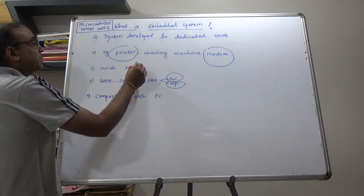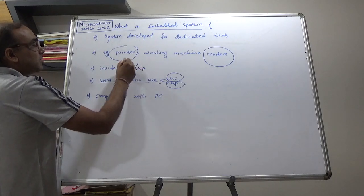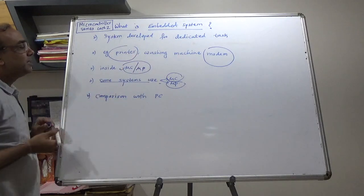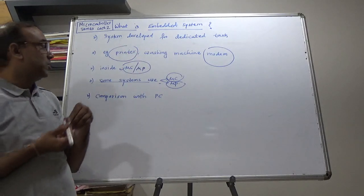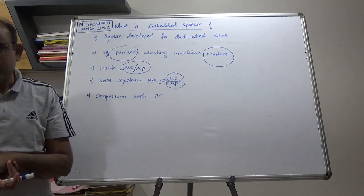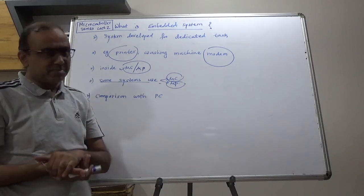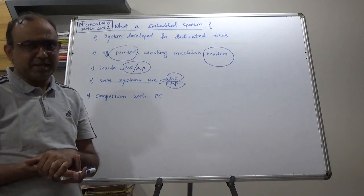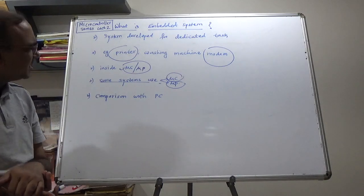So, inside there may be microcontroller or microprocessor. But, majority of embedded systems use microcontrollers because microcontrollers give us a single chip solution. We can have many different things in a single chip. And that will save our space, that will save our cost, and so many things.